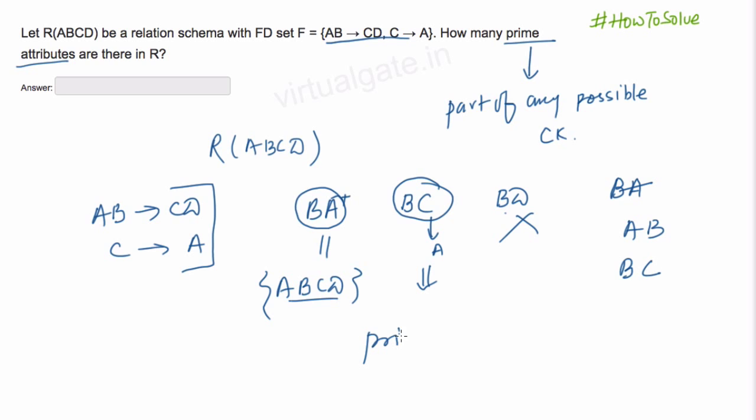What are the prime attributes? Prime attributes are A, B and C. So the number of prime attributes is 3. The answer would be 3.